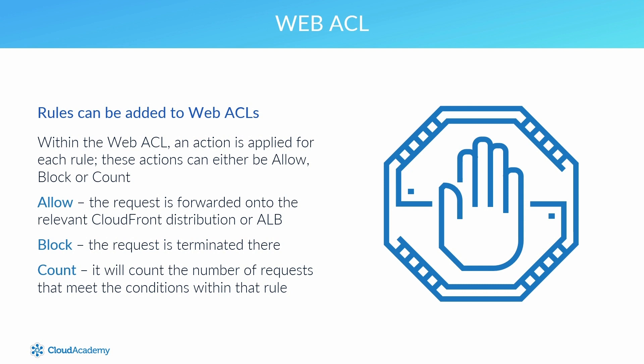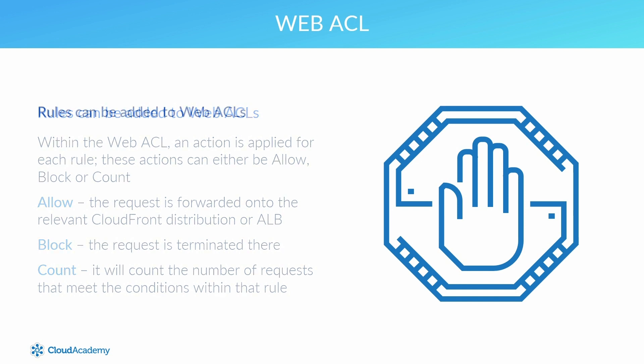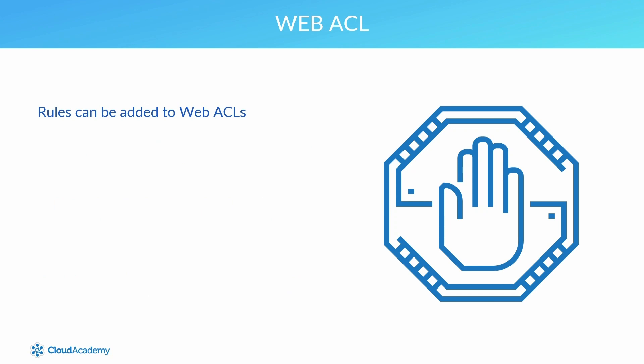If an incoming request does not meet any rule within your web ACL, then the request takes the action associated with a default action specified, which can either be allow or block. An important point is that these rules are executed in the order they are listed within the web ACL, so be careful to architect this order correctly for your rule base.